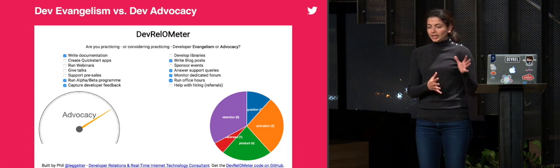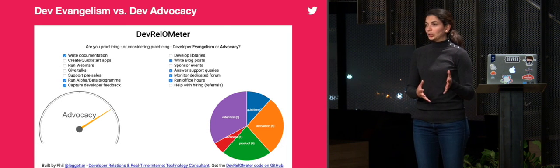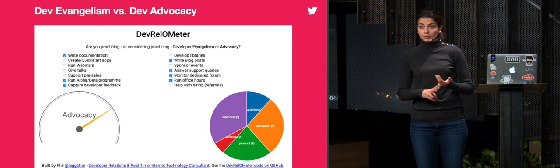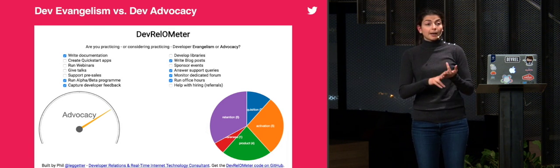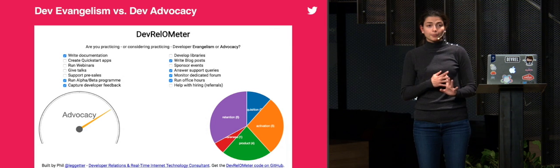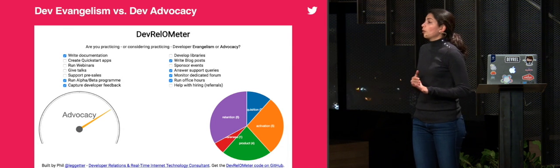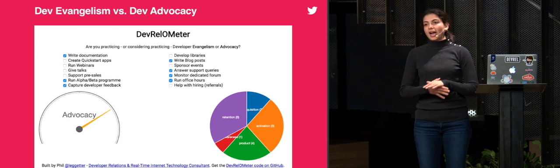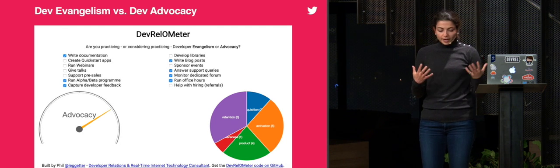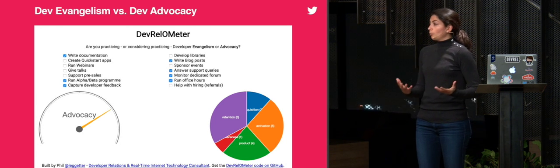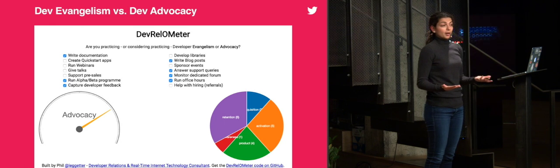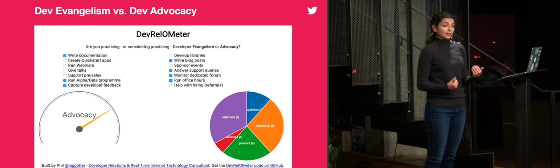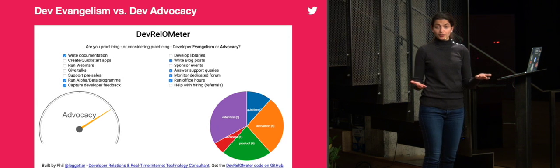In the advocacy camp, some of the things that we account include writing blog posts, doing developer education with documentation, capturing feedback, running alpha and beta programs, and interacting with product quite a bit. I filled this out for Twitter's program and we hit squarely on the advocacy mark. That is a really important part of our everyday job over at Twitter — inbound advocacy rather than outbound evangelism.